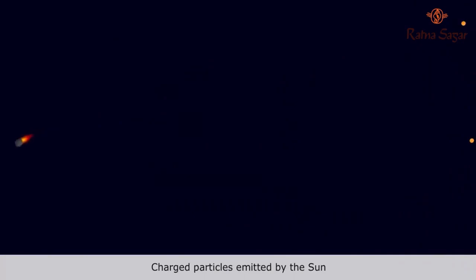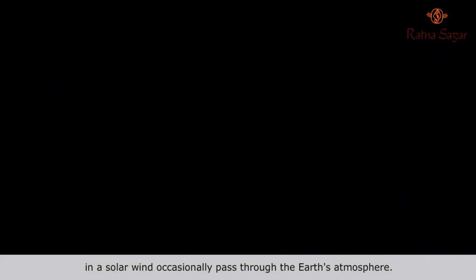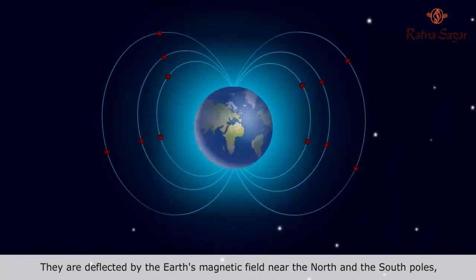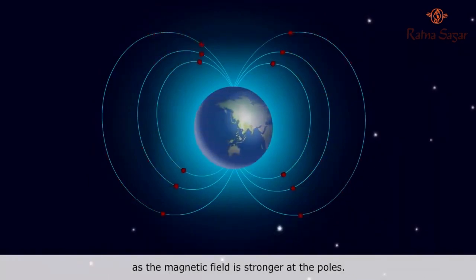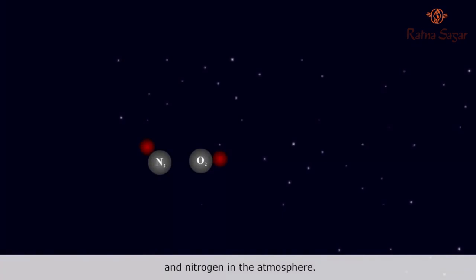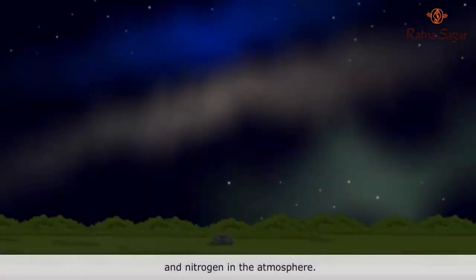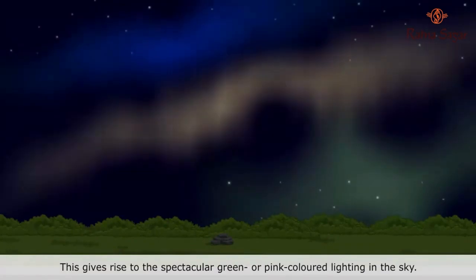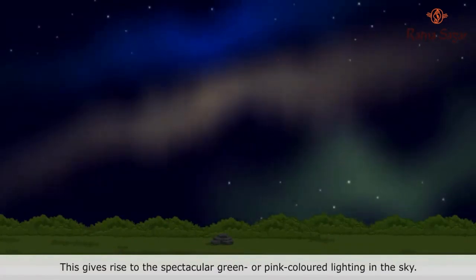Charged particles emitted by the Sun in a solar wind occasionally pass through the Earth's atmosphere. They are deflected by the Earth's magnetic field near the North and the South poles as the magnetic field is stronger at the poles. These charged particles then collide with the gaseous molecules such as Oxygen and Nitrogen in the atmosphere. This gives rise to the spectacular green or pink colored lighting in the sky.